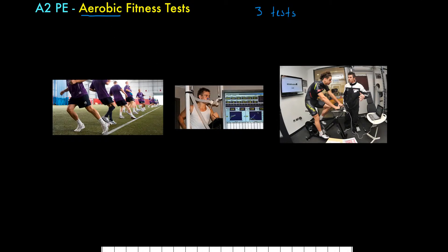Let's jump straight in with the multi-stage fitness test, which I'm just going to call the MSF test. In your notes, make sure you write down 'multi-stage fitness test.' Some people might refer to it as the bleep test, but bear in mind we have bleep tests for other things as well — for example, the abdominal conditioning test also uses bleeps as a stimulus. Multi-stage fitness test is the language we want to use.